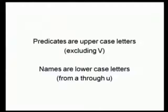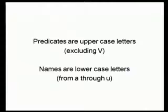We're going to continue using uppercase letters for full atomic sentences. When we wish to break atomic sentences down into subjects and predicates, we will use uppercase letters for predicates and also for relationship names. Names — like Agnes, Bob, and Betty Lou Johnson — are going to be lowercase letters. In each case, we're going to exclude V because we're using V for OR, for our logical connective for disjunction.